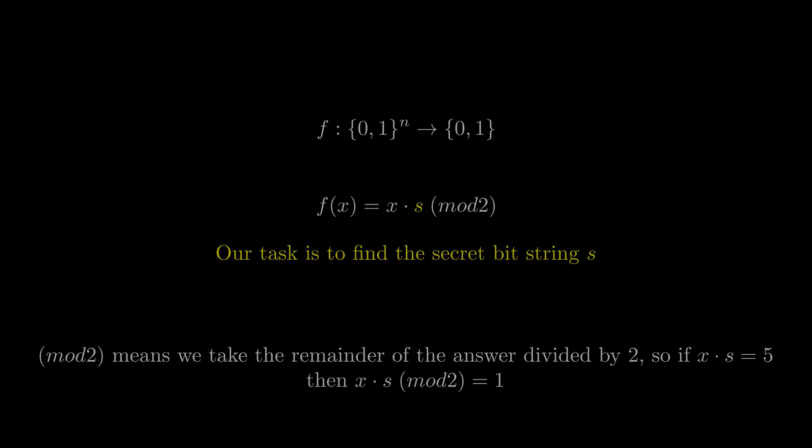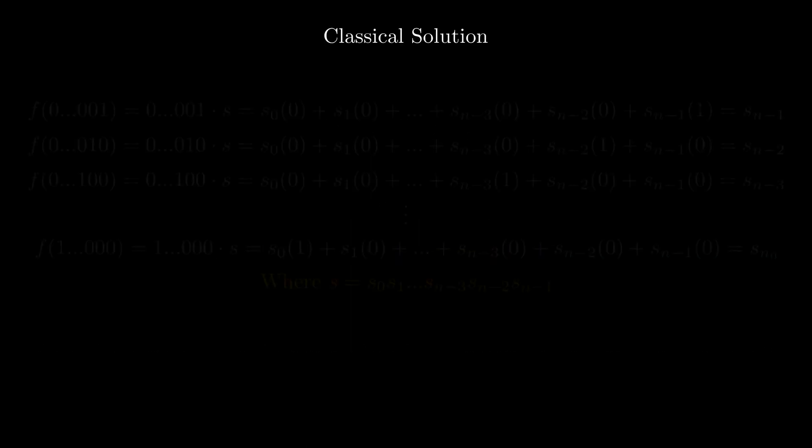On a classical computer, the approach is to input a bit string of all zeros except for 1 in one position. This allows us to get the value of one position of the bit string s, as all the zeros in the input will cancel out in the dot product.